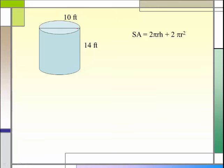Okay, in this problem I have a different number. The 10 represents what? The diameter. I need the radius. So what's the radius? 5. So now I can plug the numbers into my formula. 2 times π times 5 times 14 plus 2 times π times 5 squared.